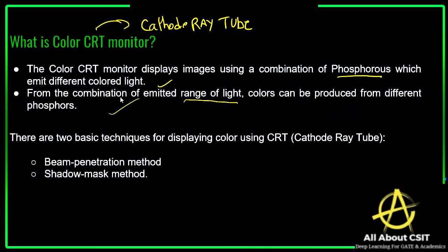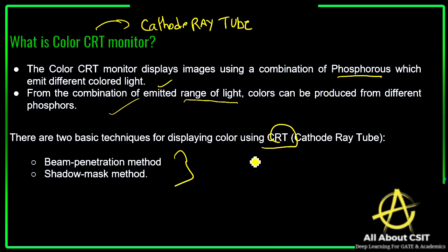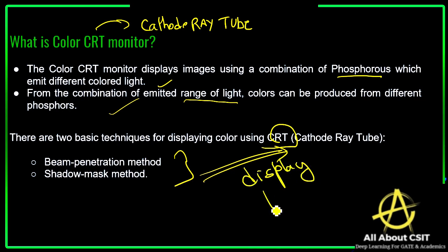There are two basic techniques for displaying color using the CRT. These two basic techniques are beam penetration and the shadow mask method. Both beam penetration and shadow mask methods are used for displaying colors using the cathode ray tube, which allows different colors to be displayed.